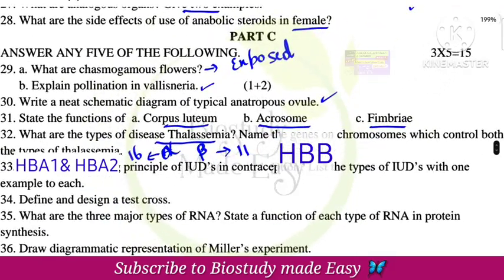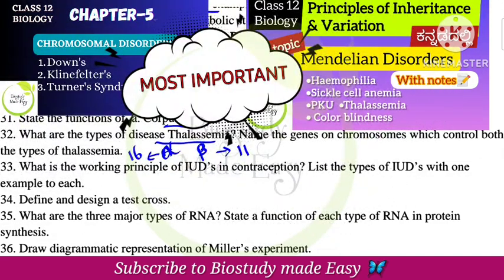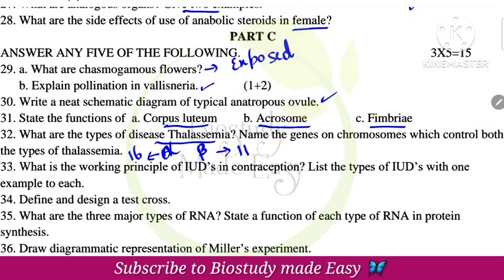For chromosomal disorders and Mendelian disorders, refer to the detailed video uploaded on this channel — it has very important information about genetic disorders in the principles of inheritance and variation chapter. What is the working principle of IUD in contraception?